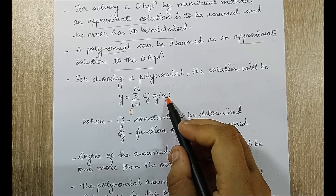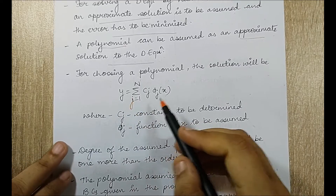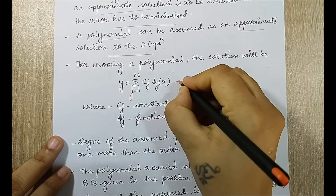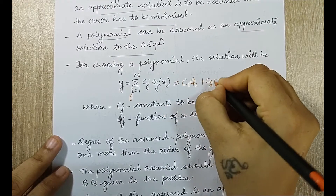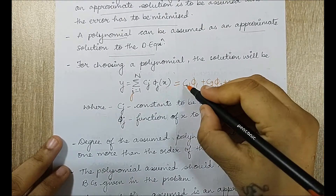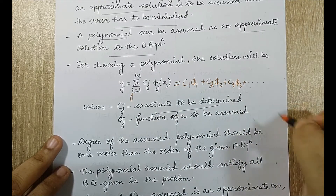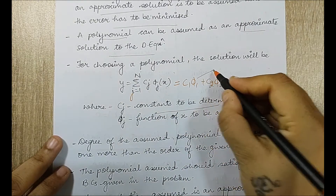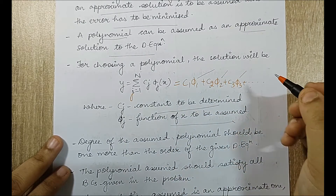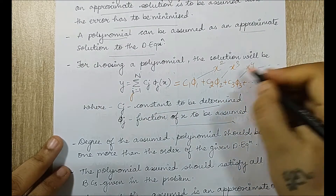When j goes from 1 to n, the polynomial expands as c1·phi1 + c2·phi2 + c3·phi3 and so on. Here c1, c2, c3 are constants to be determined using certain methods, and phi1, phi2, phi3 are functions of x — they can be x squared, x cubed, x plus 4, or anything like that.